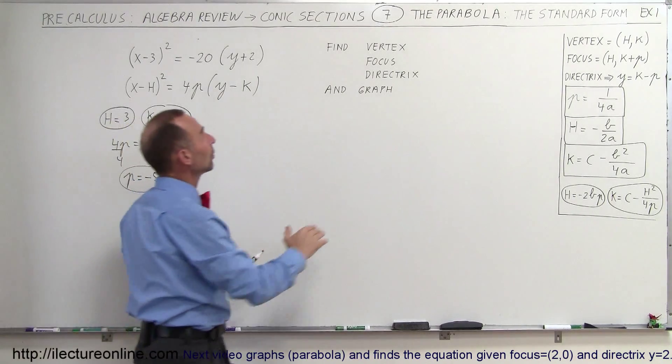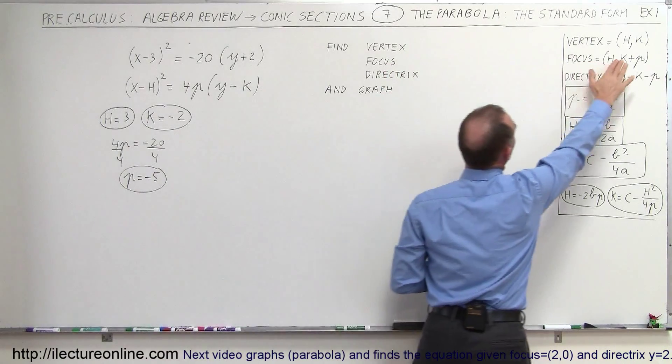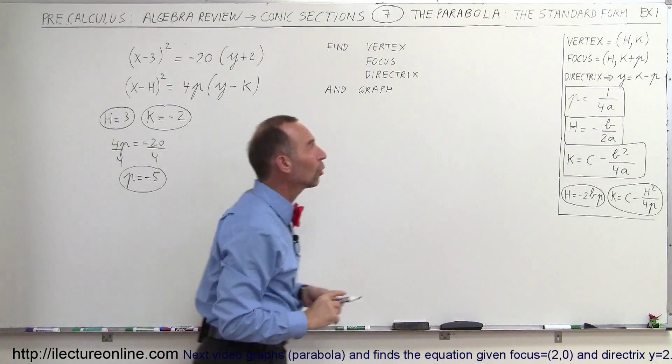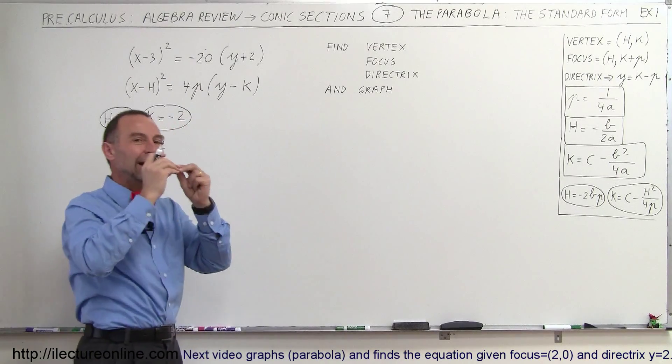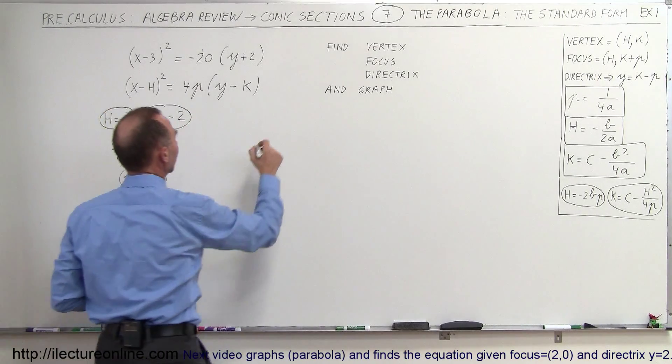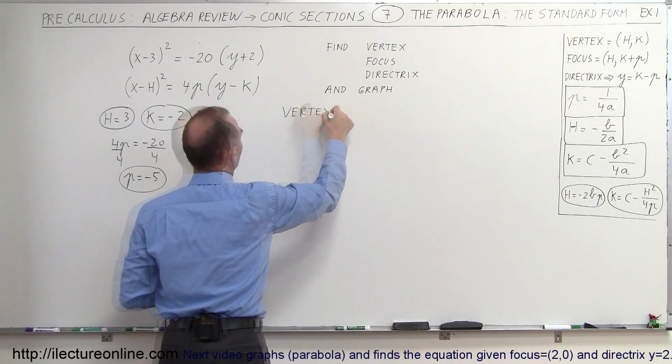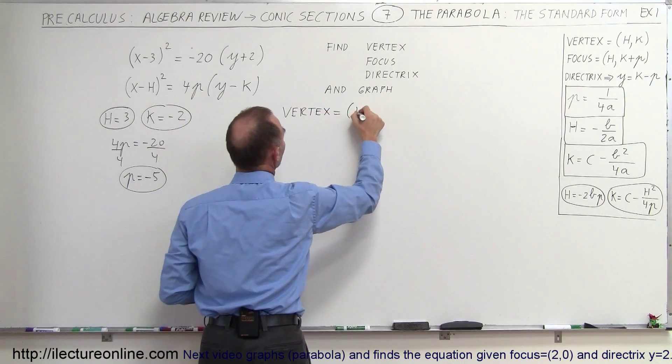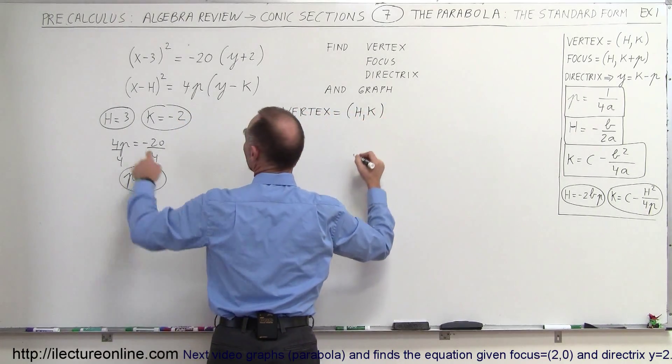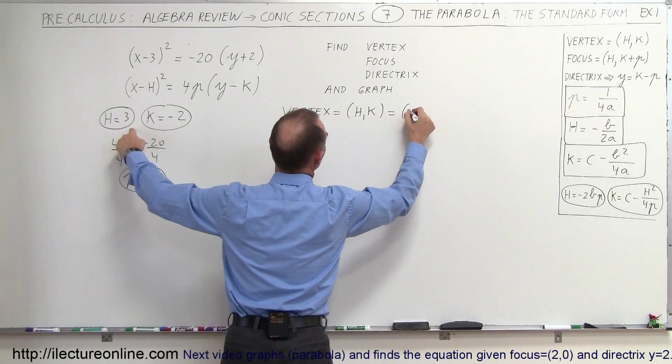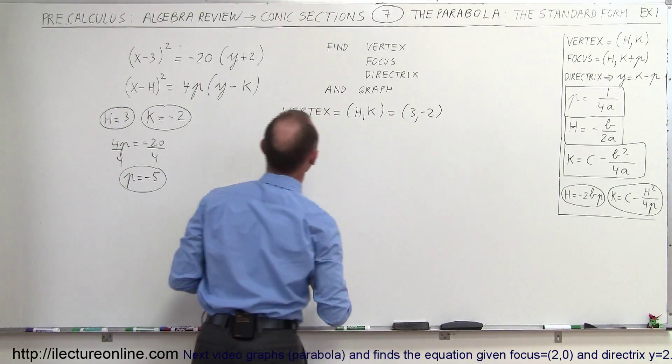And then you come over here and then you realize the vertex is simply equal to the h, k coordinates. So that's the place where the parabola is at the highest or lowest point. So we can say the vertex is equal to h, k, and h is 3, and k is negative 2. So that's the point of the vertex.